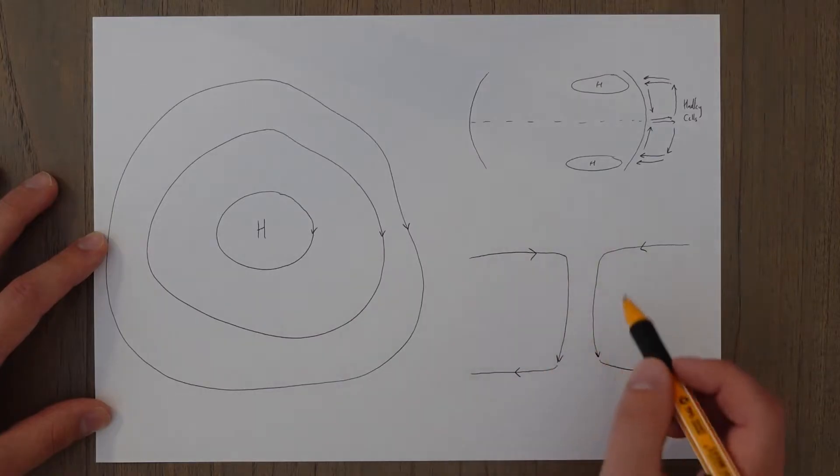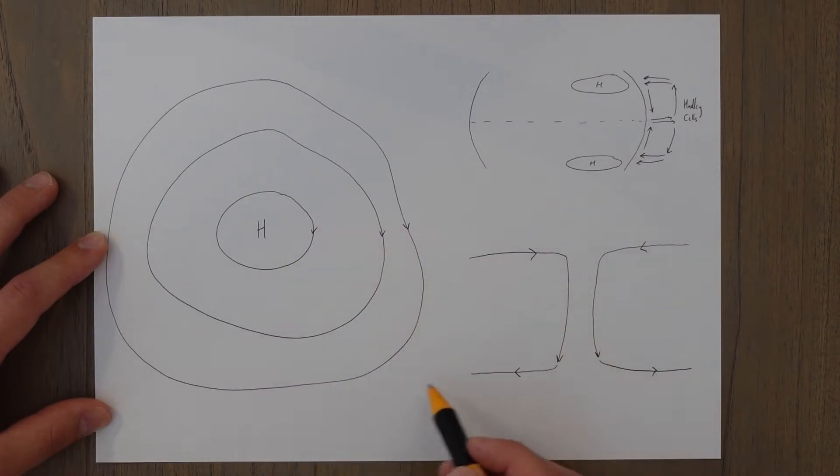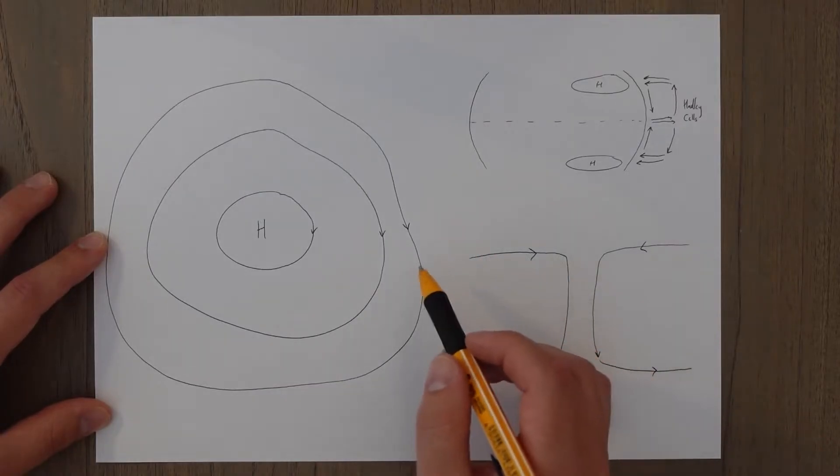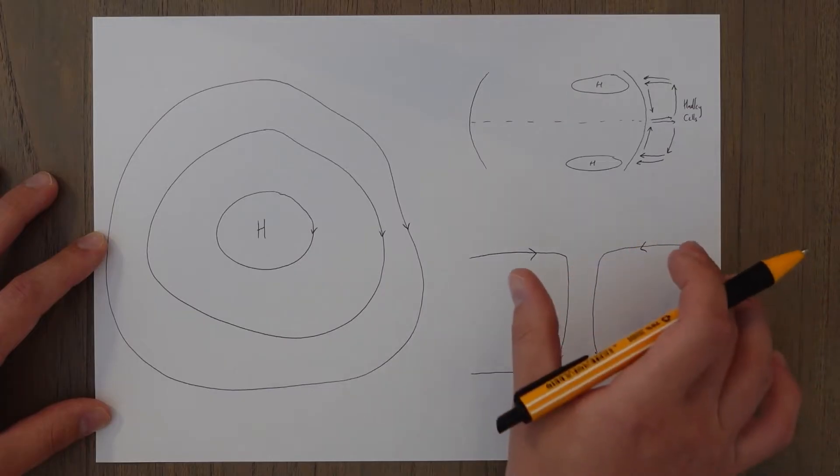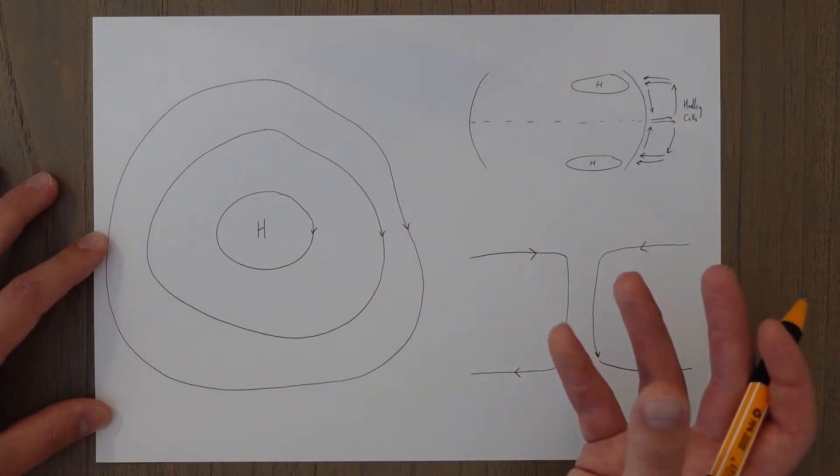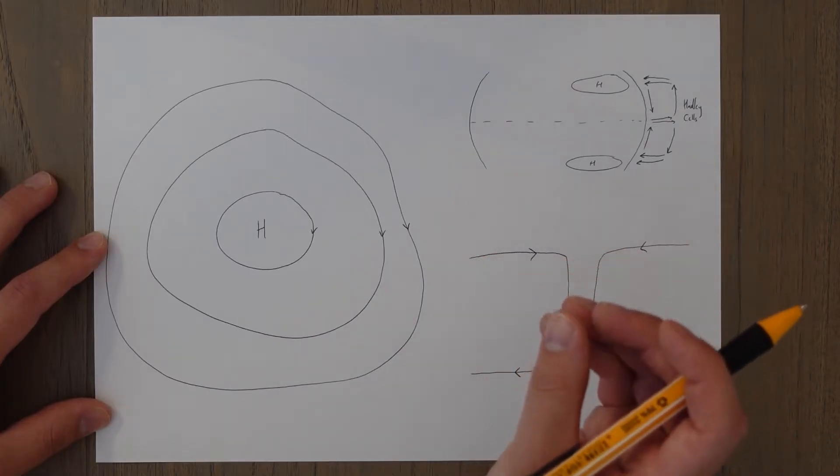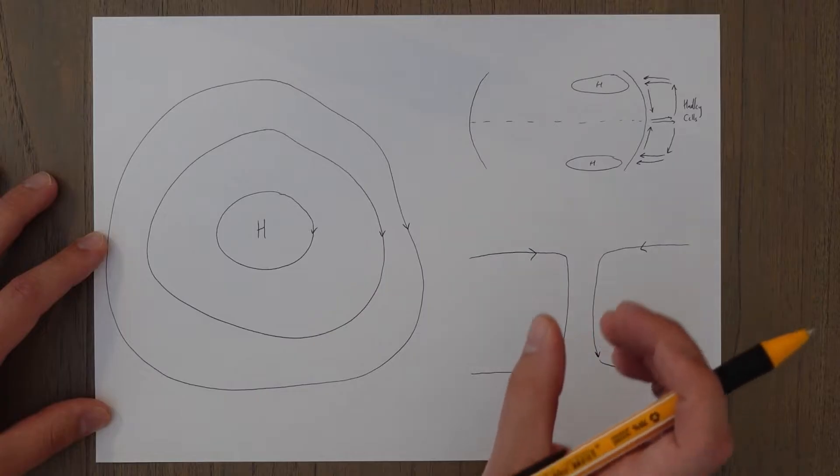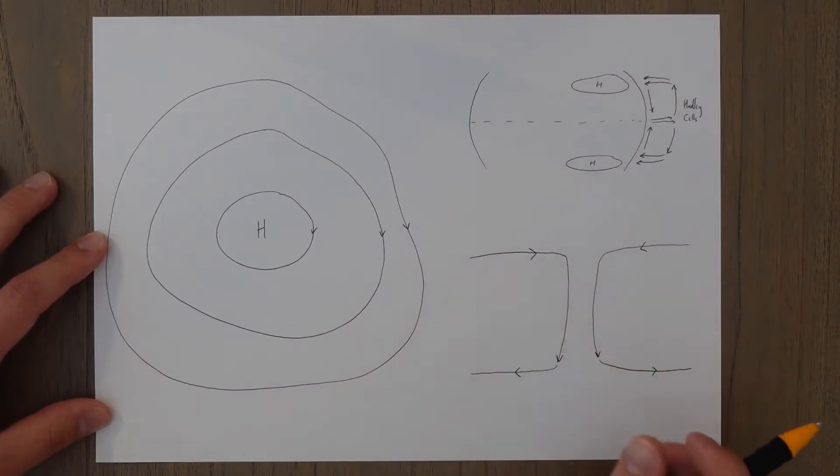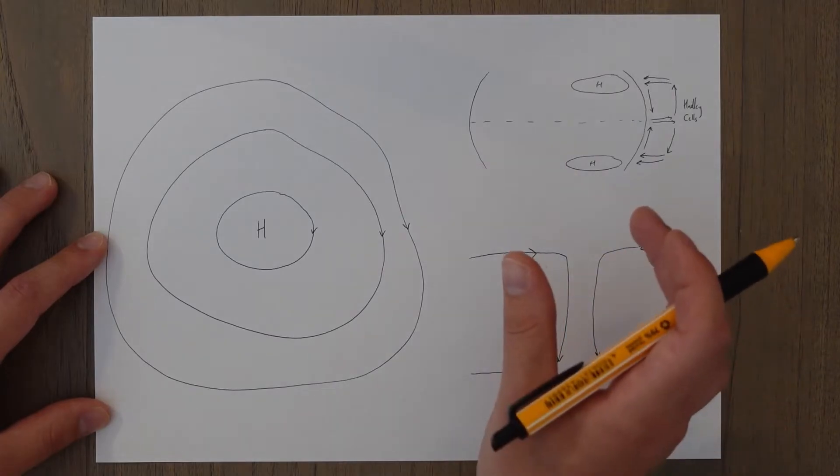So at the surface, we have air diverging away because it's flowing from high to low. So it's spreading out at the bottom and at the higher levels, it's getting sucked in and descending down. So I like to think of it as like a drain in a sink or a bath or something like that. But instead of water getting sucked in, it's the air getting sucked in and it's getting pulled down and then spreads out at the surface.